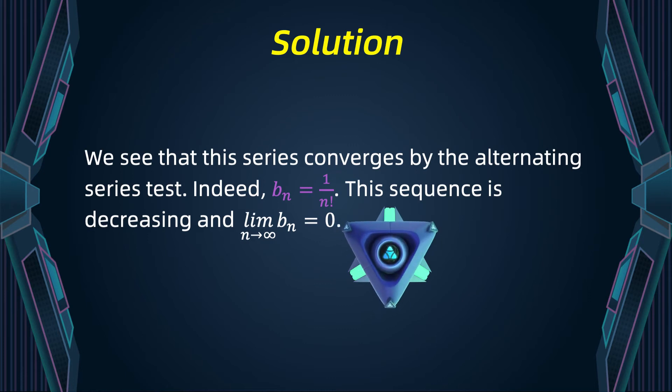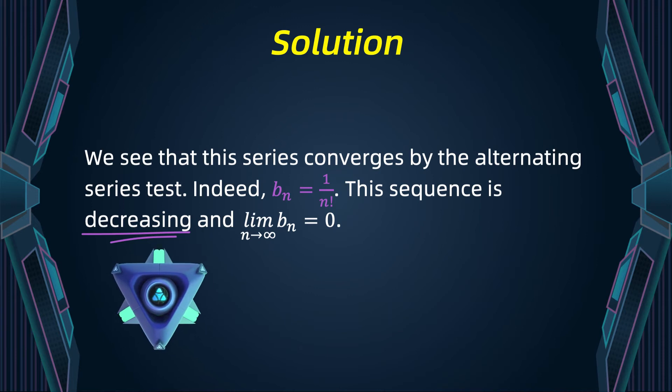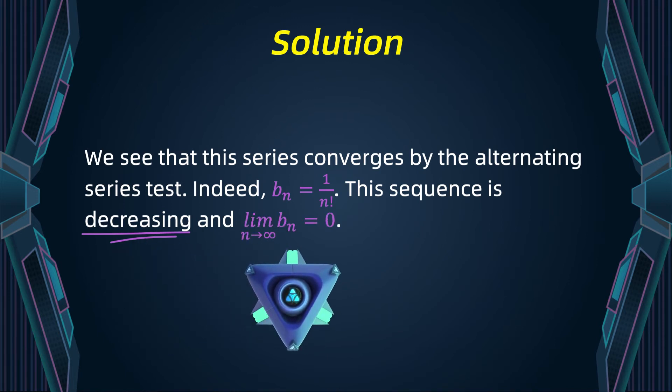bn is equal to one divided by n factorial. It is clear that bn is positive. Moreover, this sequence is easily seen to be decreasing and the limit as n approaches infinity of bn is equal to zero. Therefore, by the alternating series test, our alternating series converges.